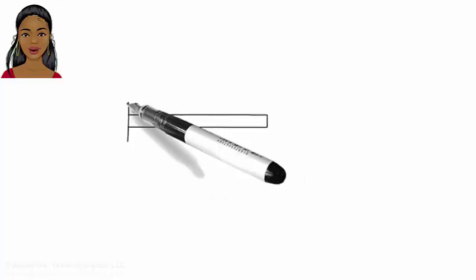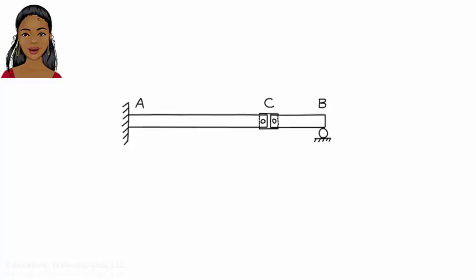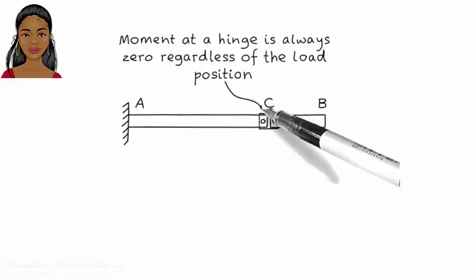Here is another example. What is the moment influence line for point C? In this beam, we have a real hinge at C. Bending moment at a hinge is always zero no matter where the unit load is located. Therefore, the influence line for moment at C is a flat line.